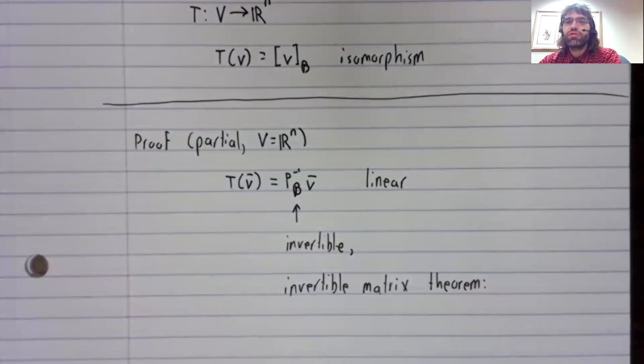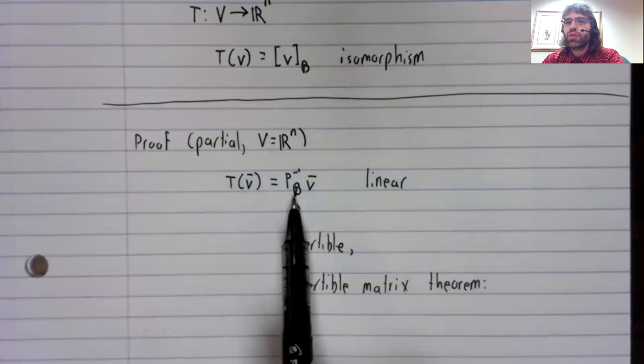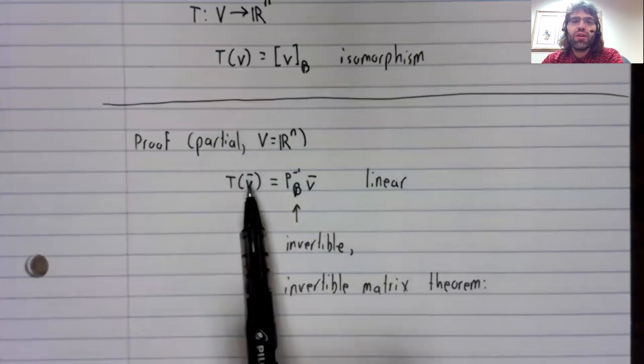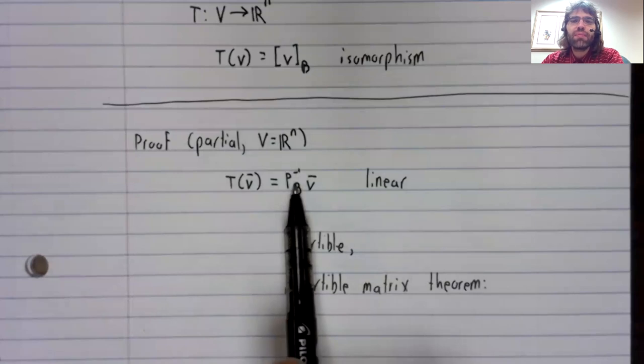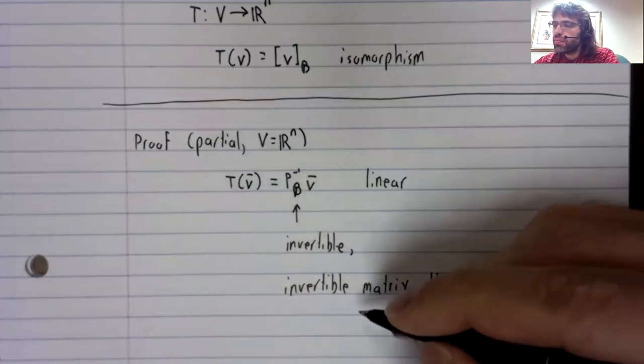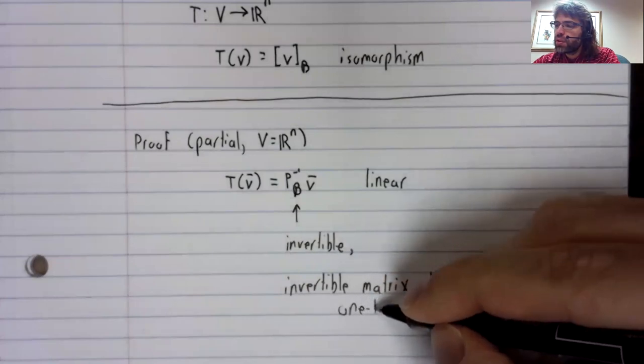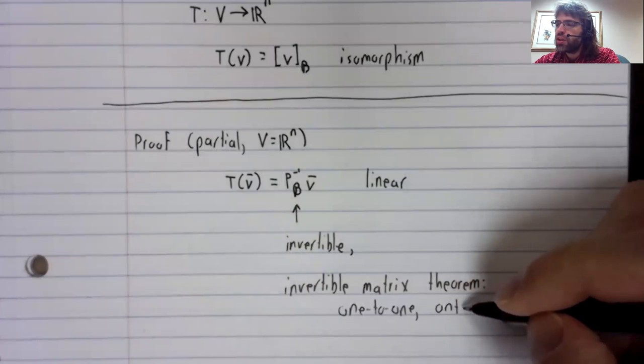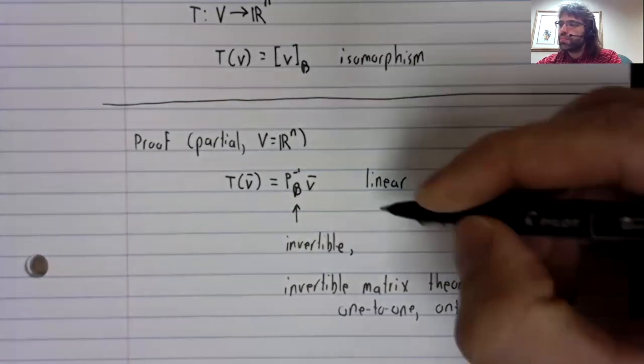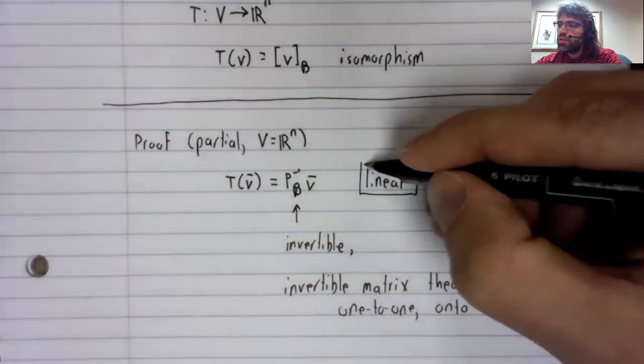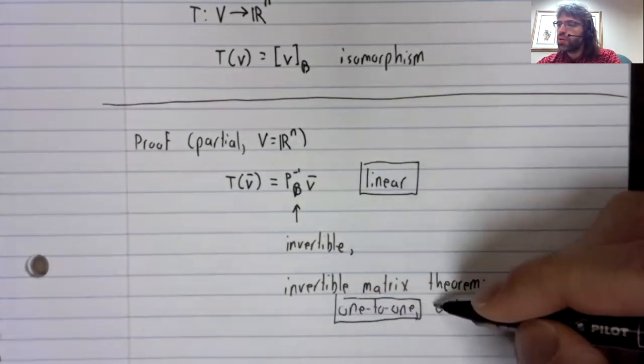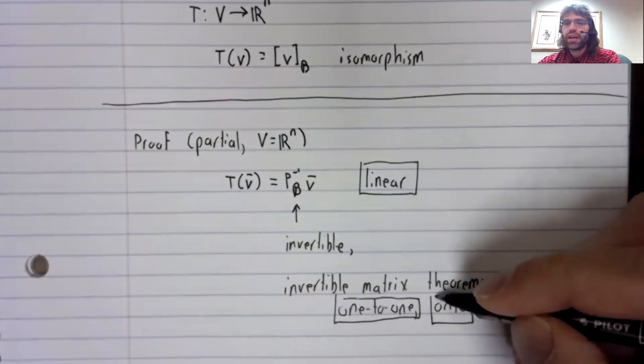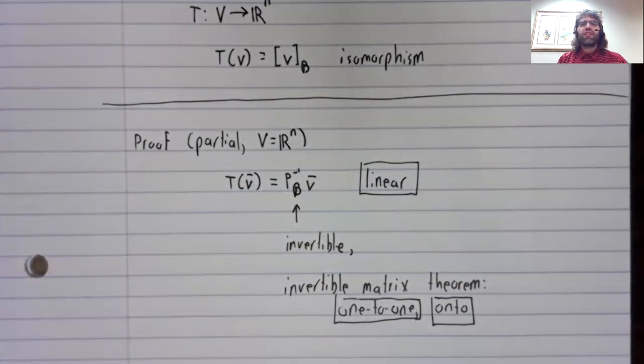The invertible matrix theorem says that if a matrix is invertible, the transformation T of V equals that matrix times V is one-to-one and onto. Linear, one-to-one, and onto is the definition of an isomorphism.